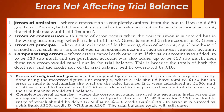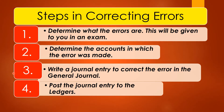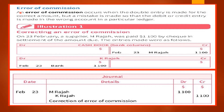So those were the six types of errors. The steps in correcting errors are: first, determine what the errors are — whether they are errors of omission, errors of commission, etc. Next, determine the accounts in which the errors were made; there should be at least two of them for each error. Third, write a journal entry to correct the error in the general journal. Fourth, post the journal entry to the ledger.